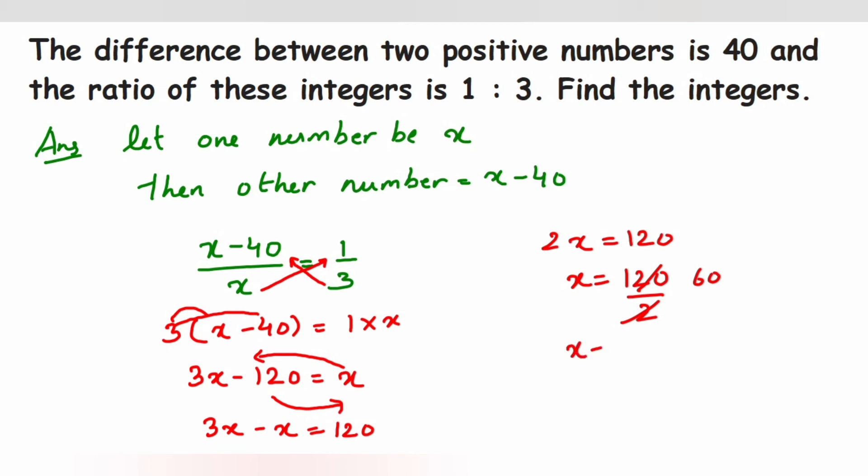Therefore we got one value, that is x equals 60. If x equals 60, the other number which is x minus 40 will be equal to 60 minus 40, which is equal to 20. So therefore the two numbers will be 20 and 60.